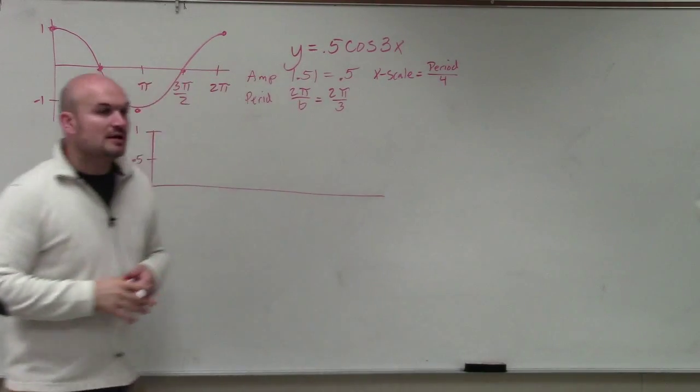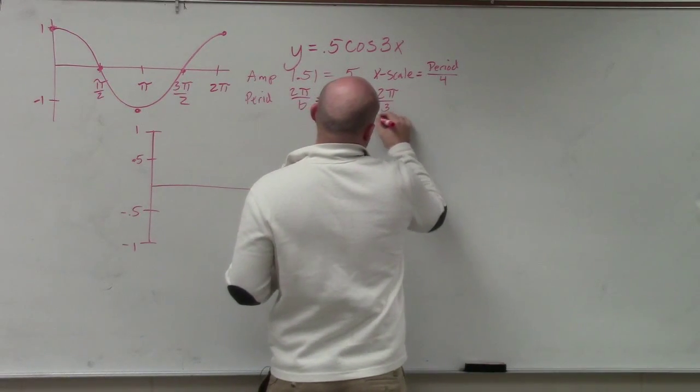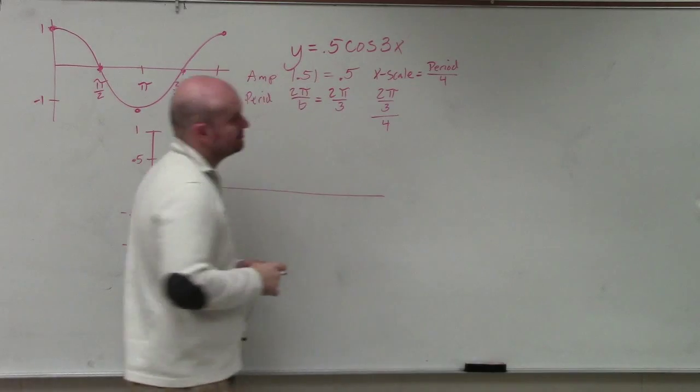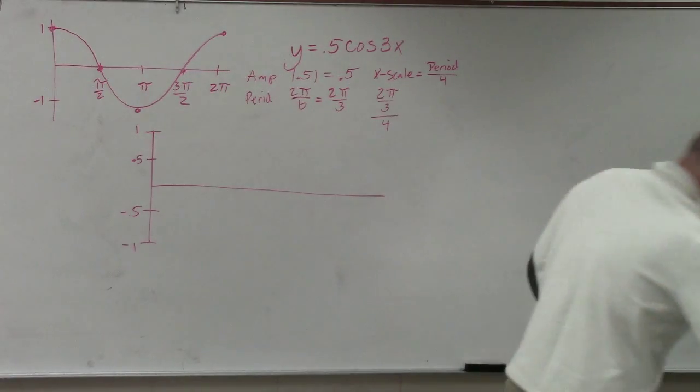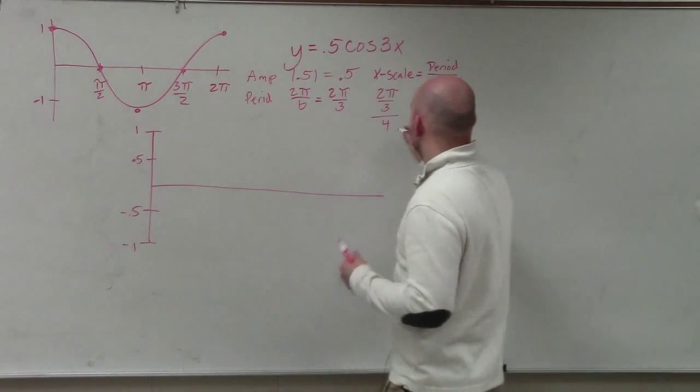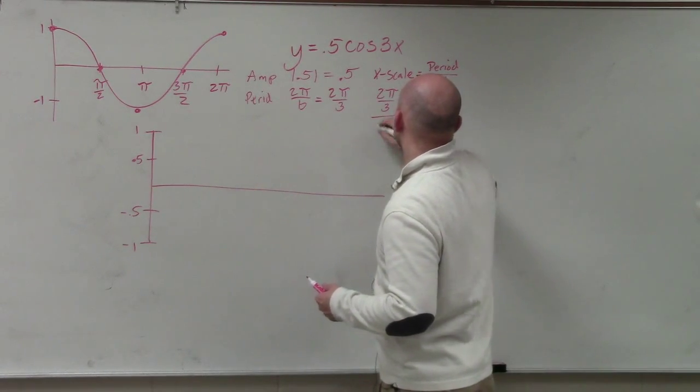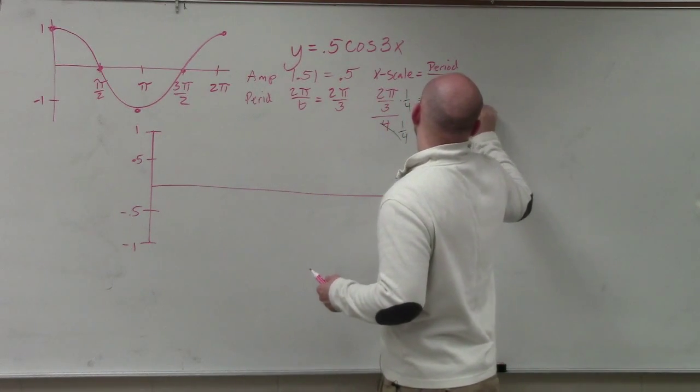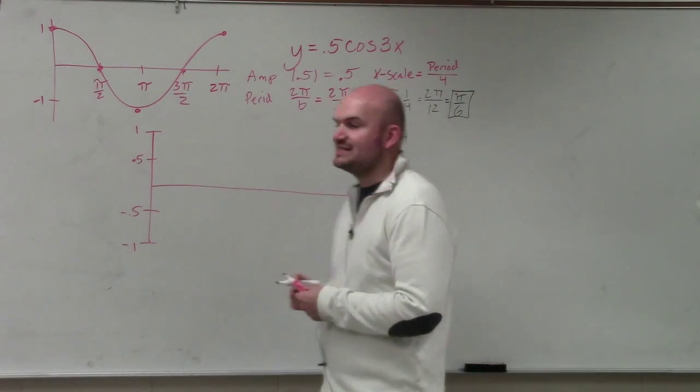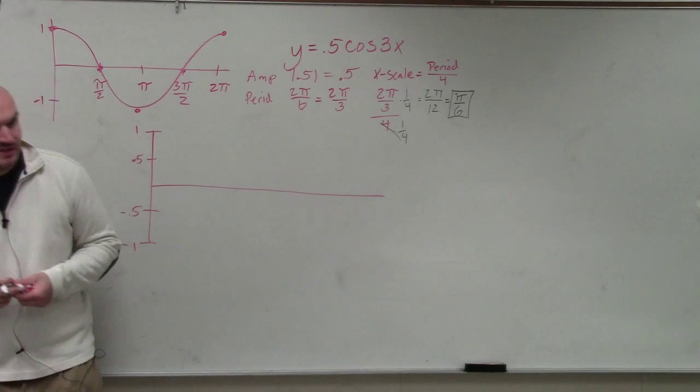So I need to take 2π/3 and divide that by 4. I can multiply by the reciprocal, which is 1/4. So my scaling is going to be π/6. Does everybody see how I got π/6?